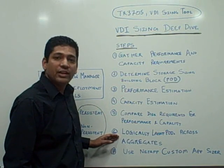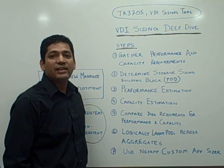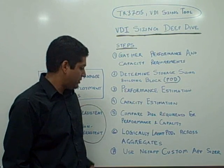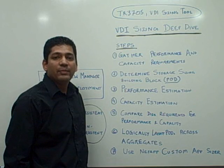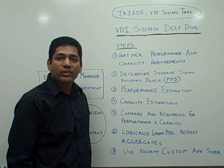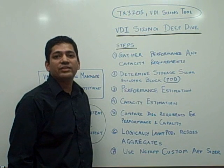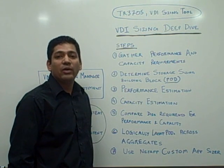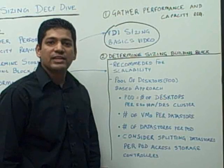The next step is to logically lay out the pods across different aggregates to get an understanding of the performance and capacity workloads across different aggregates. The last step is to use the NetApp custom app sizer, input the capacity and performance workload for different aggregates, and get the system configuration in terms of file recommendations and the amount of storage required to meet the customer's performance and capacity needs.